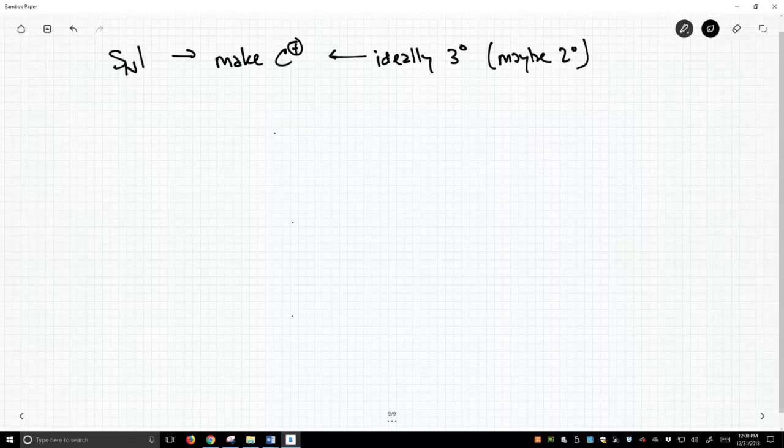So let's say that we take something like t-butanol. Now this is a tertiary alcohol, it's going to give rise to our tertiary carbocation. And if we treat this with something like sulfuric acid, a strong acid, and an alcohol like methanol.